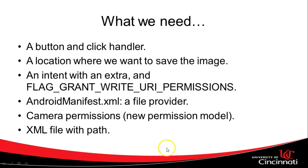So what we need is a button and a click handler — we already have that from a previous video. Next we need a location where we want to save the image. We can choose a private directory or the public directory where all shared images go by default, which is what we're going to use. Then we need an intent with an extra and the flag grant write URI permissions. Essentially we're not actually saving the image to the SD card — the camera is — so we need to proxy permissions over to the camera.